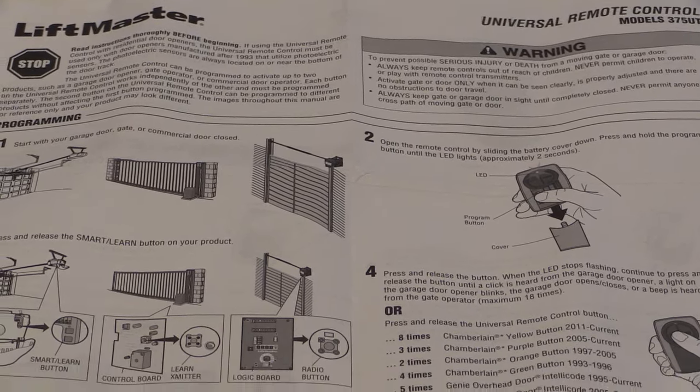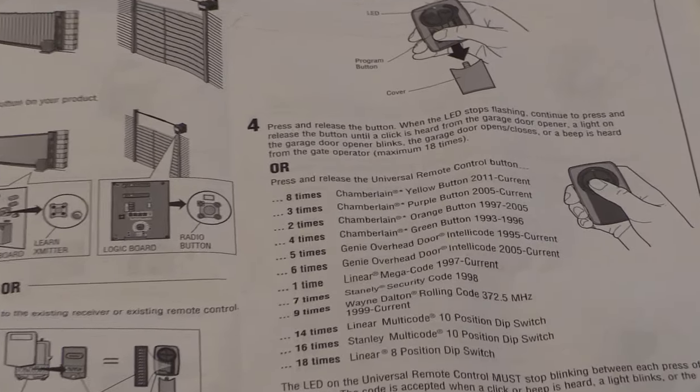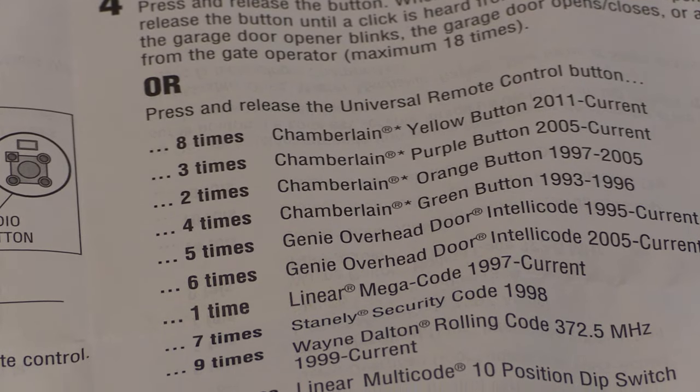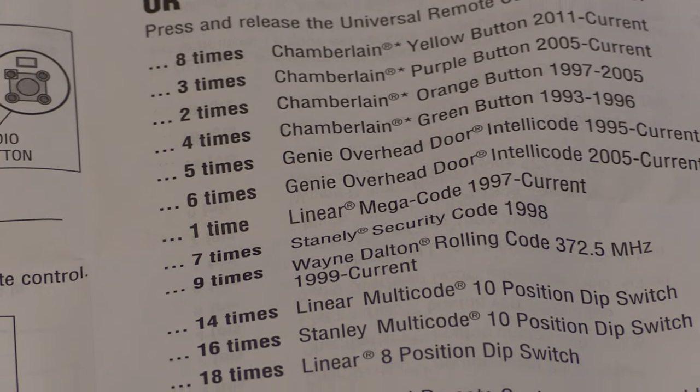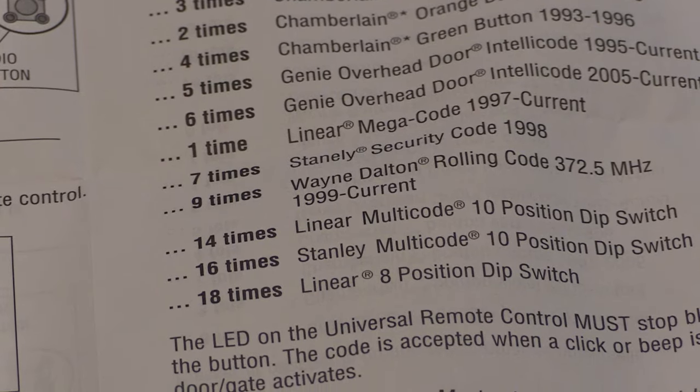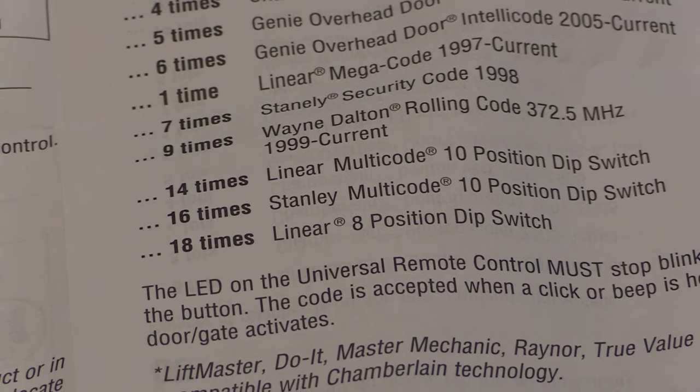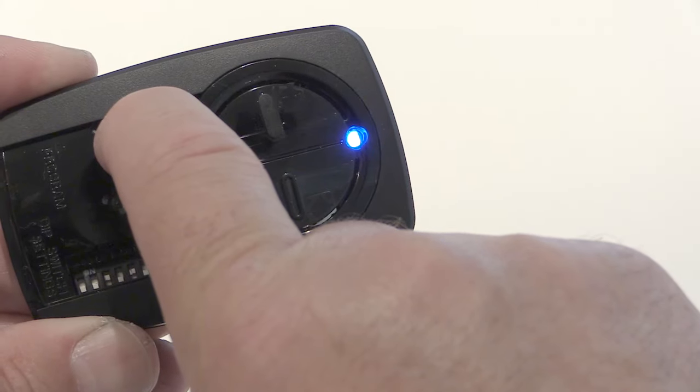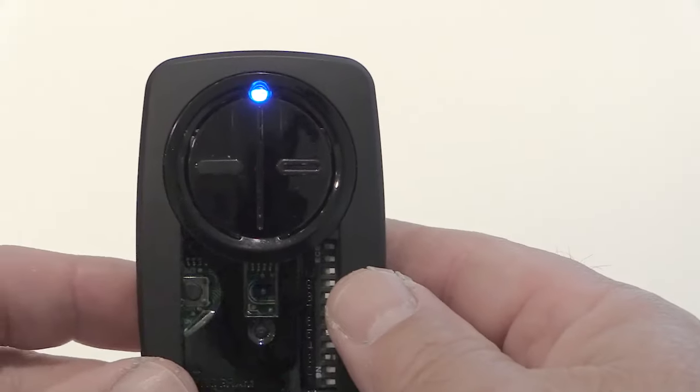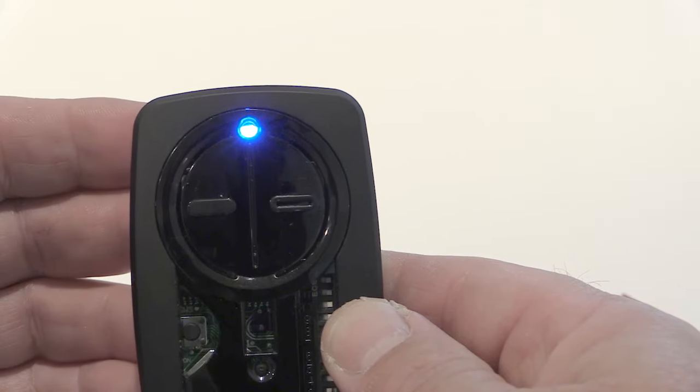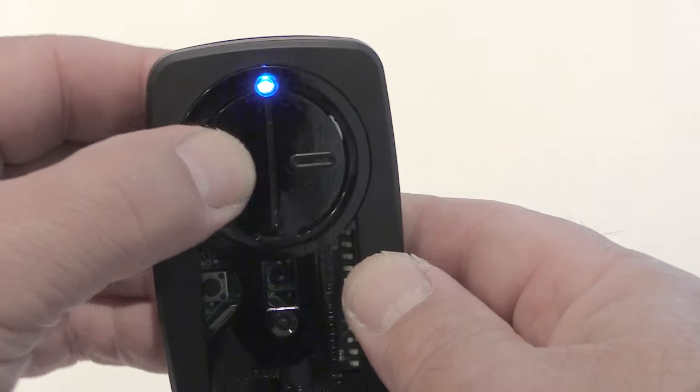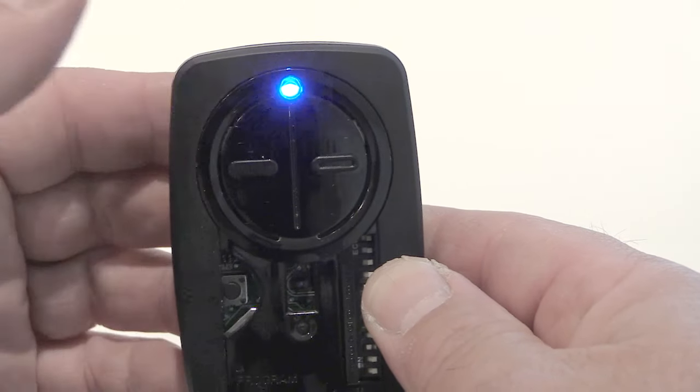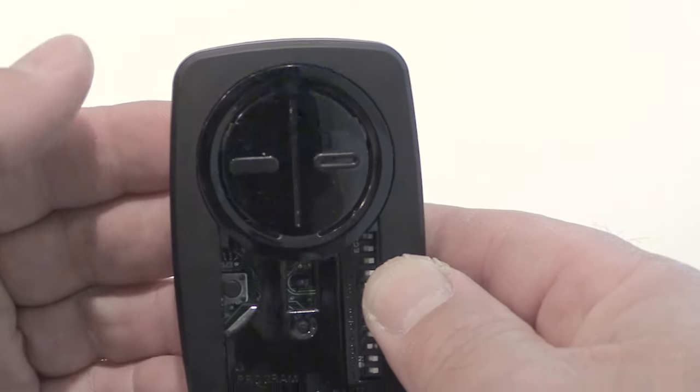Then look in the instructions in step number four to find the Linear 8-position dip switch remote. It's at the bottom of the list here, and you'll see that we have to push our button 18 times to program it. Inside the remote control, press and hold the program learn button until the blue LED lights up steady, and then push the button you're going to want to use 18 times. Make sure after each push, you wait for the blue light to go steady again before pushing it the next time.